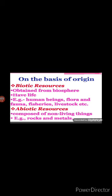The first classification is on the basis of origin. It can be divided into two: biotic and abiotic. Biotic means the resources that are obtained from the biosphere and have life, such as human beings, flora and fauna, fisheries, livestock, etc. — that means these are obtained from living organisms. Abiotic resources are all those things which are composed of non-living things, for example rocks and metals.